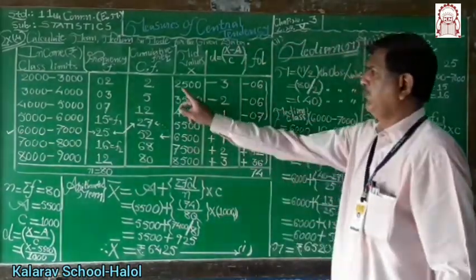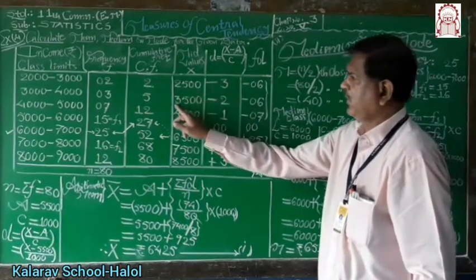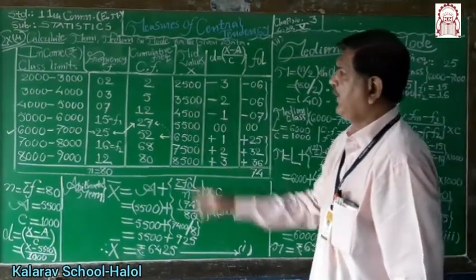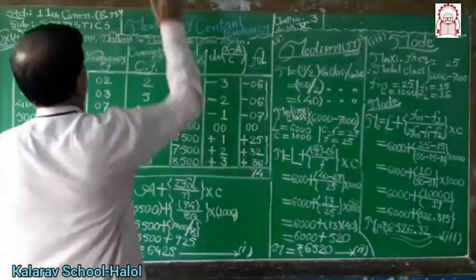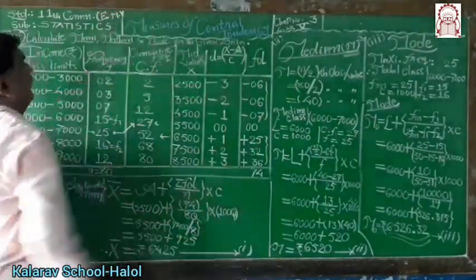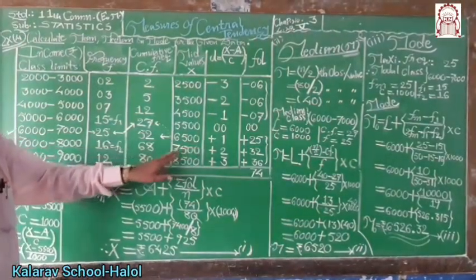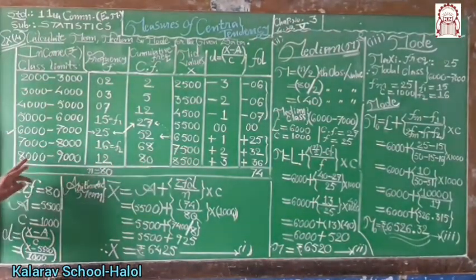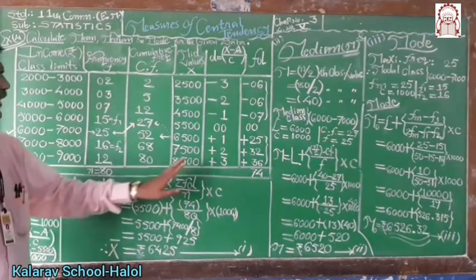The mid-values for each class are: 2500, 3500, 4500, 5500, 6500, 7500, and 8500 for the last class 8000 to 9000.